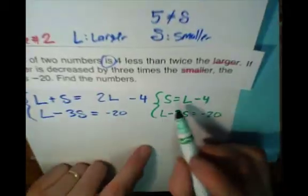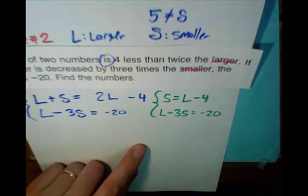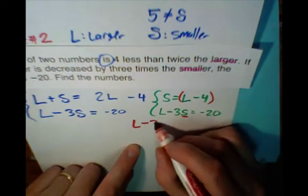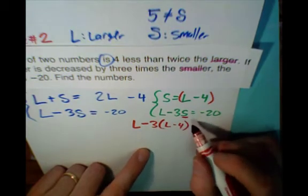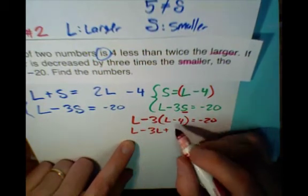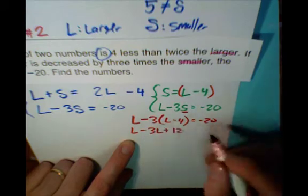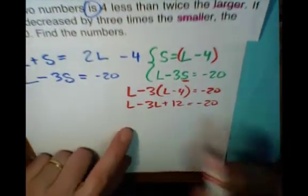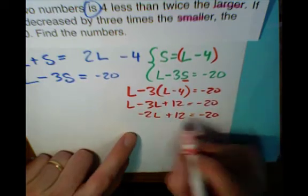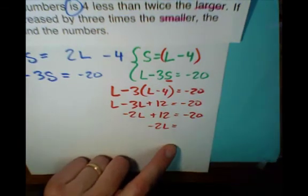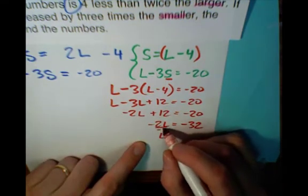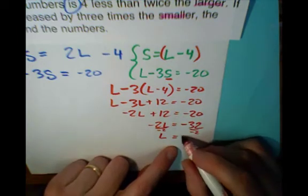I'm going to use substitution because S equals L minus 4 — that's an obvious case of substitution. So I substitute L minus 4 where it says S: L minus 3 times the quantity (L minus 4) equals negative 20. Using the distributive property: minus 3L plus 12 — notice negative 3 times negative 4 gives positive 12. Combining like terms: negative 2L plus 12 equals negative 20. Subtracting 12 from both sides: negative 2L equals negative 32. Dividing by negative 2: L equals positive 16.